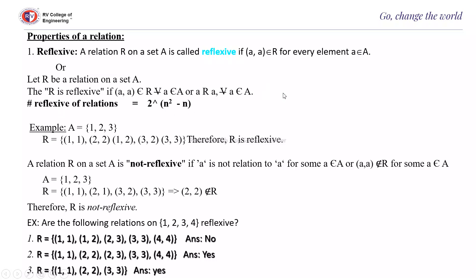How you get this: in a reflexive matrix, all diagonal elements must be present, so you have only one choice for each — they must all be 1. For the remaining N²−N non-diagonal elements, each element may be present or not, giving two choices each. Therefore, the number of reflexive relations equals 2^(N²−N).